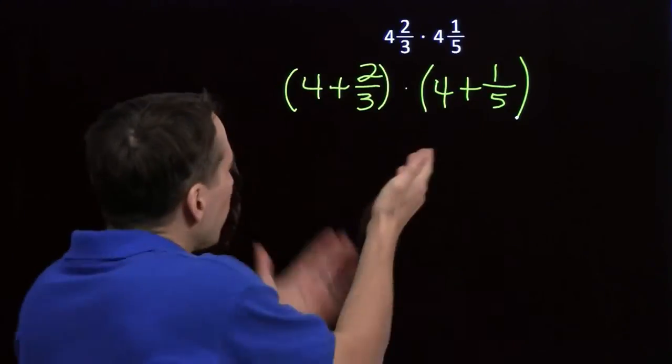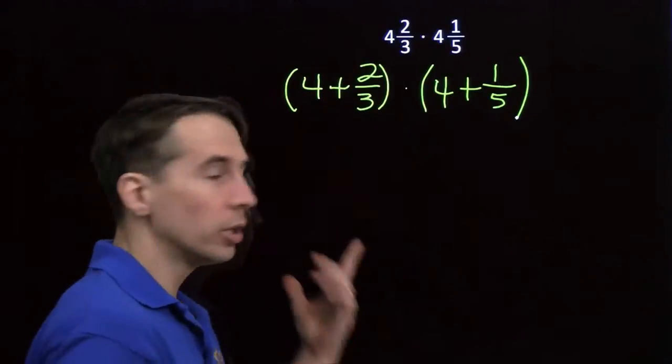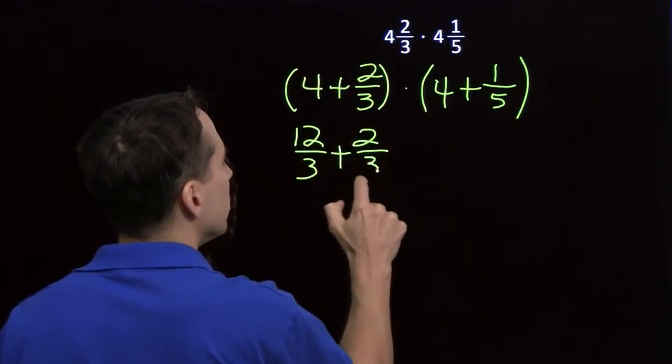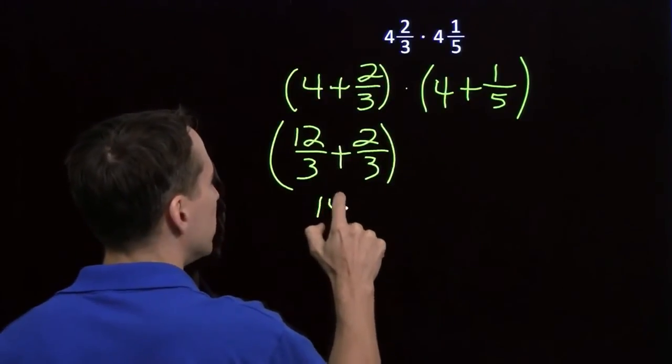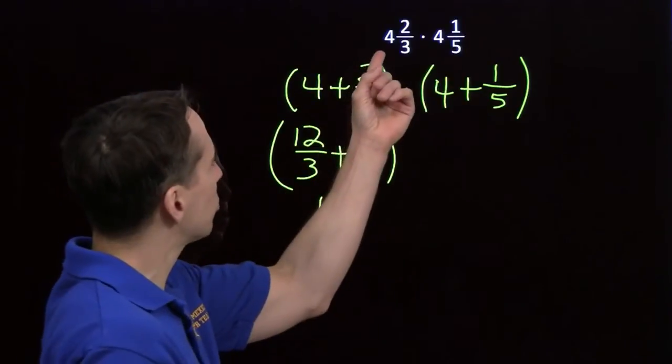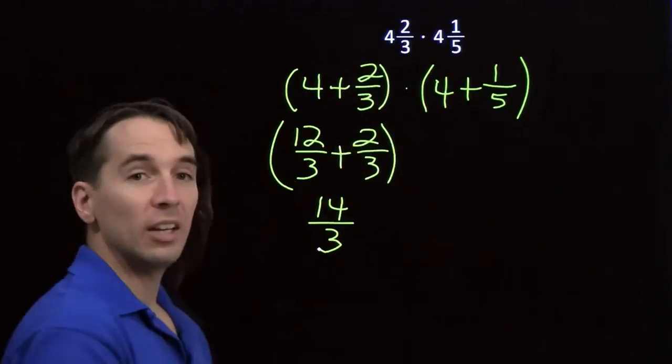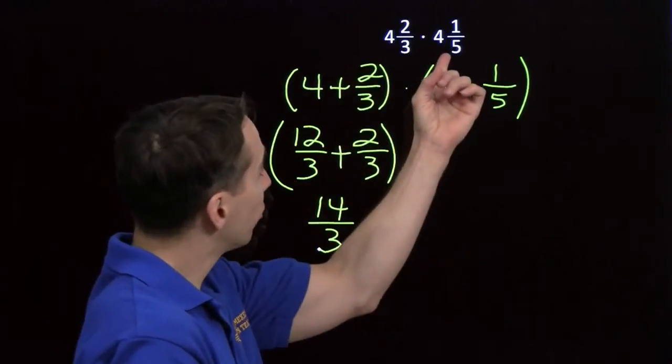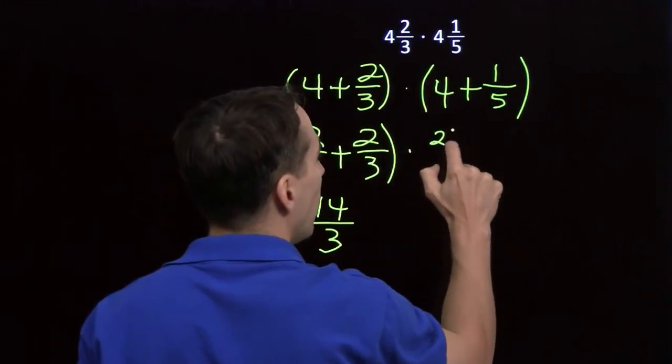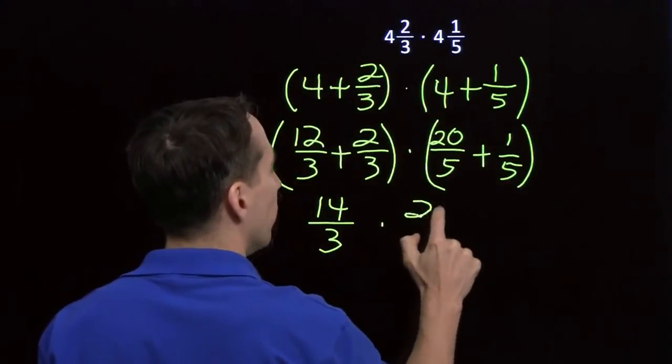Wait, we know how to multiply fractions. If we could just take these and turn them into fractions, then we'll be all set. 4 plus ⅔, well, 4 is just 12/3. So we're adding on the ⅔. 12 plus 2, that's 14/3. Oh, we don't really have to write this out. We can see this right from the beginning. 4 and ⅔. Well, 4 is 12/3. Add on the ⅔, we get 14/3. We can do the same thing over here with the 4⅕. 4 is just 20/5. We add on the 1, and we'll get 21/5.